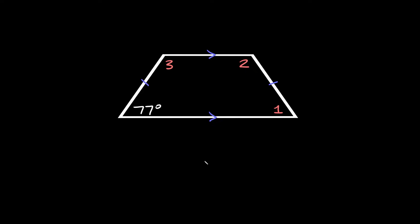What's up you freaking geniuses? In this video I'm going to teach you how to find angles and lengths in an isosceles trapezoid. Here's our trapezoid — both of these sides are congruent and the two bases are parallel.